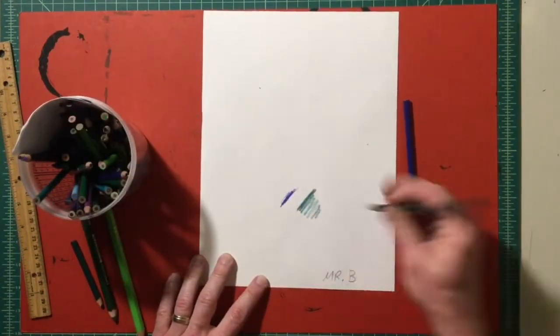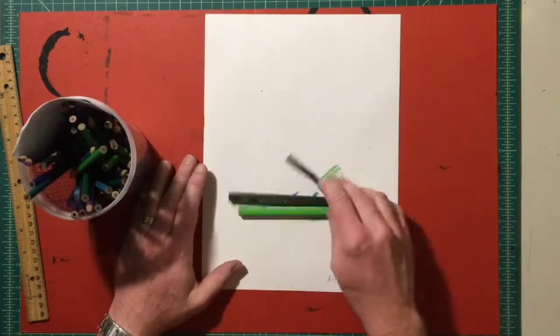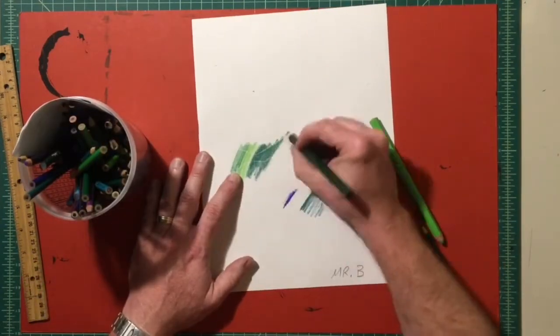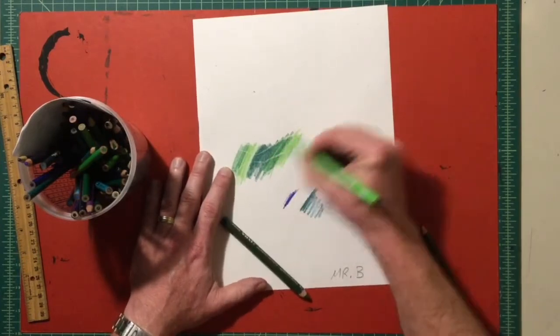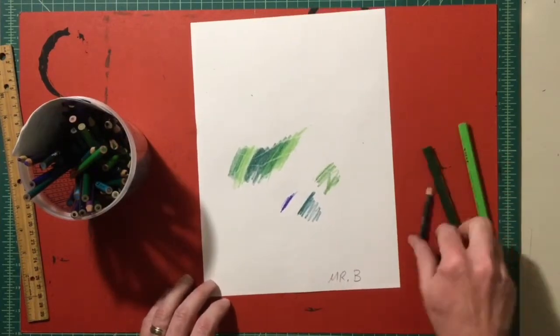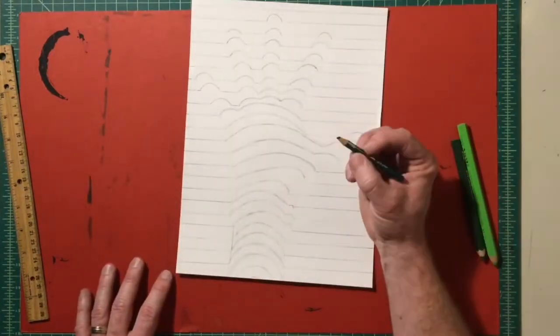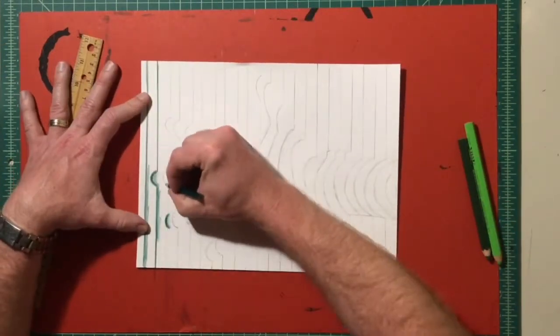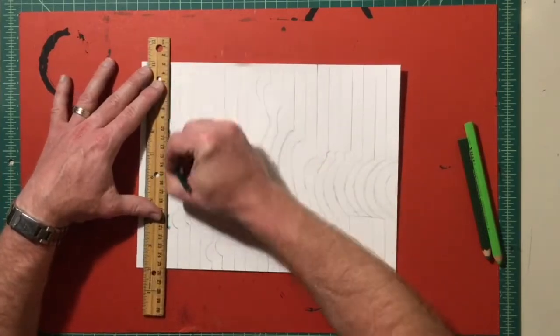Now you can color this any way you want to. This is your piece of artwork, you're the artist, make your choices. I'm going to show you one way that works. I'm going to use the cool colors and I'm going to go from the darkest color to the lightest color. And I'd like to use three colors.